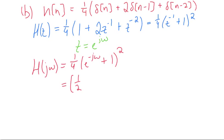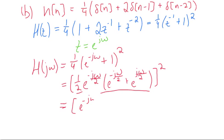So we get h(z) equals one-fourth times (e^(-jω/2) + e^(jω/2)) squared. We get h(z) equals one-fourth times 2 cosine(ω/2) squared.